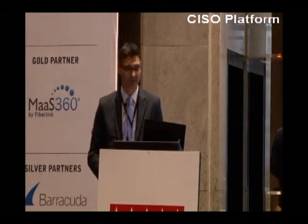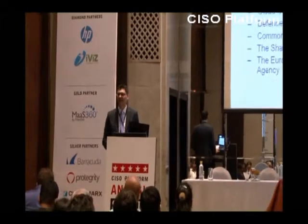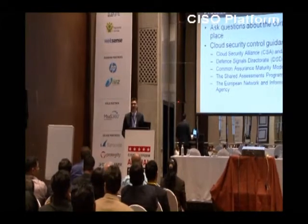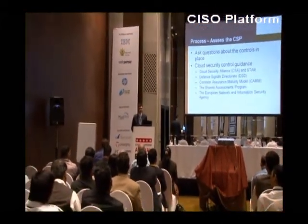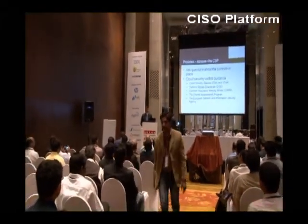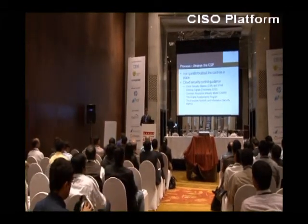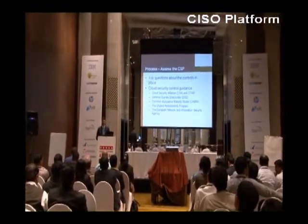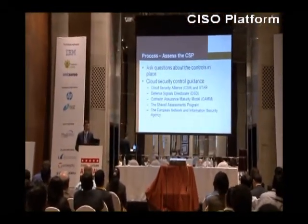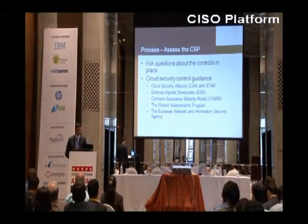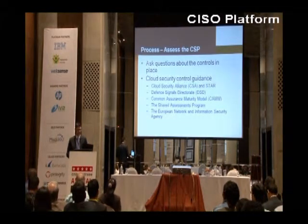Assess the cloud service provider. There are many different ways of doing this. One, you can just accept what they say at face value. Two, you can do some type of audit yourself. Or three, you can use a third party. There's lots of good material on the internet, some of it free. I tend to use the Cloud Security Alliance information — they have a very comprehensive control framework which is free. It outlines all of the possible controls you can think of. It's also used by a lot of organisations through the STAR, which is the Security, Trust and Assurance Registry. So there are a lot of companies that have assessed themselves against the Cloud Security Alliance framework and documented their controls. There is also other guidance from the Defence Signals Directorate, the Australian government's equivalent, the Common Assurance Maturity Model, Shared Assessments Program, and the European Network and Information Security Agency.